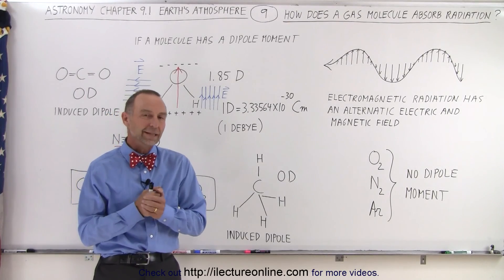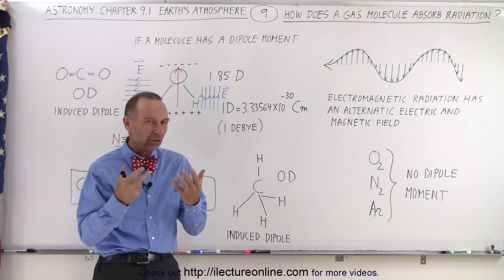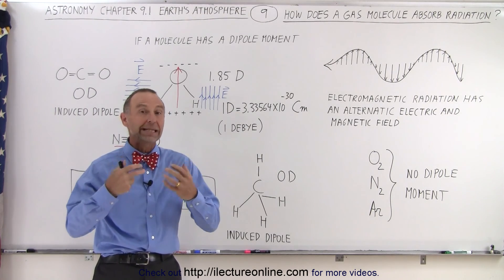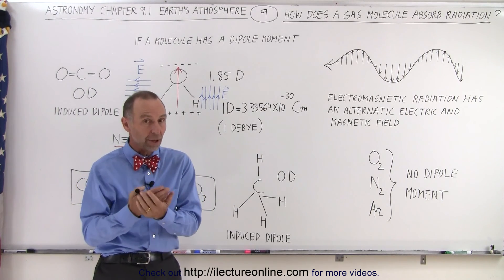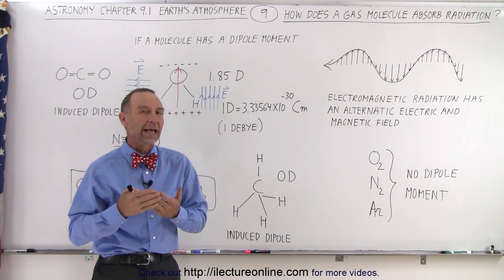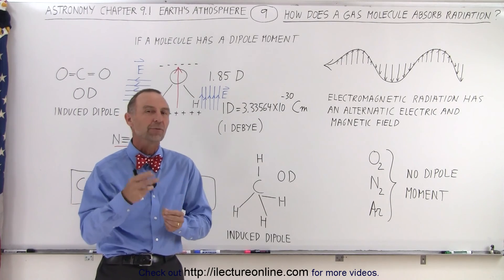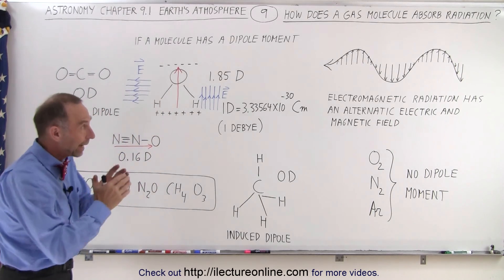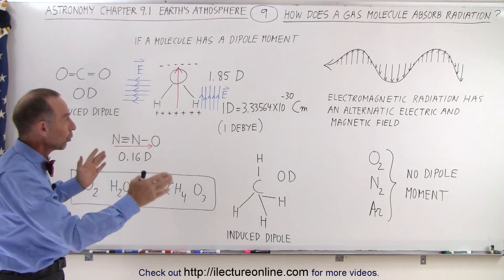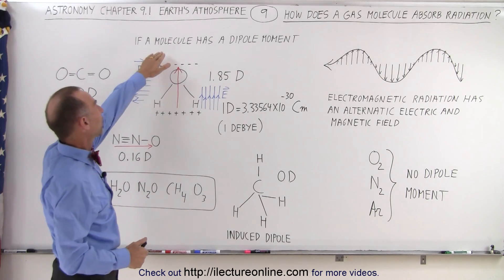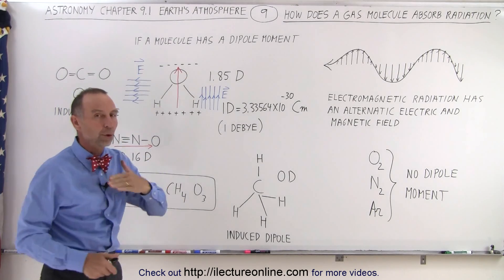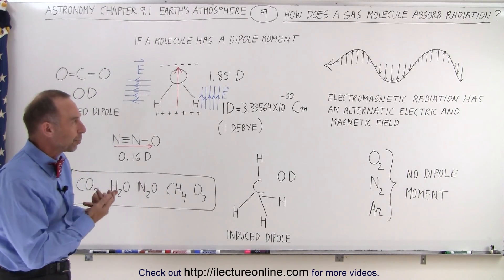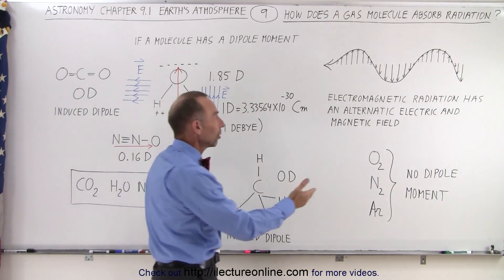Welcome to Electronline. Now let's tackle the question: how do molecules in the atmosphere actually absorb radiation? It turns out some molecules are very good at doing so and others are not capable of absorbing electromagnetic radiation. The big separator between those two groups is whether or not the molecule has a dipole moment. Before we look at what a dipole moment is, let's first look at what radiation is.